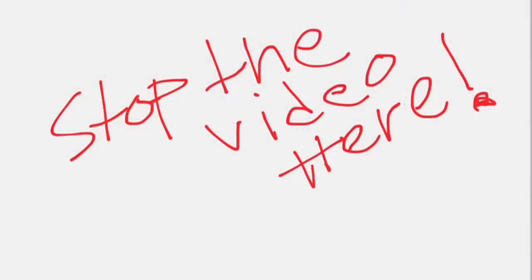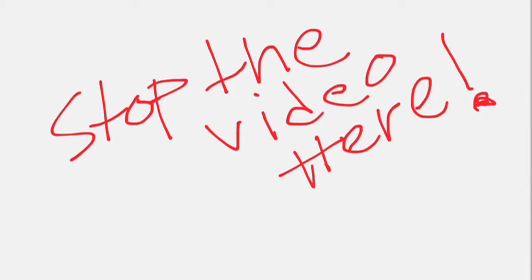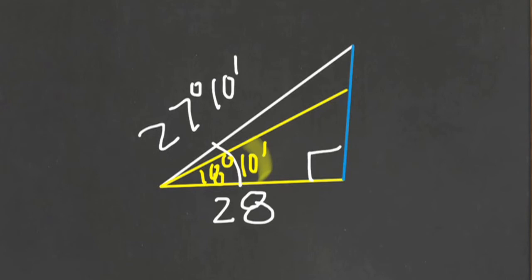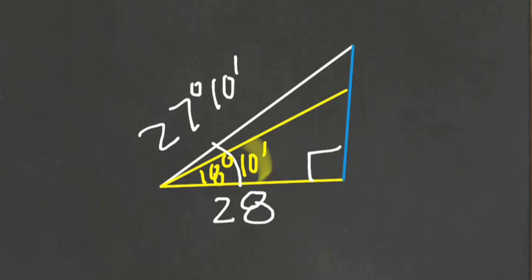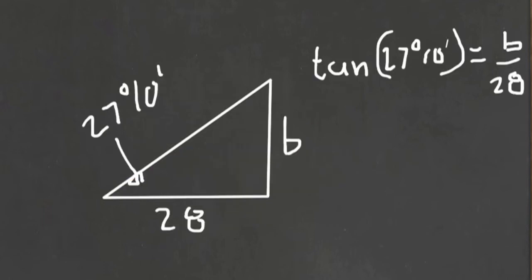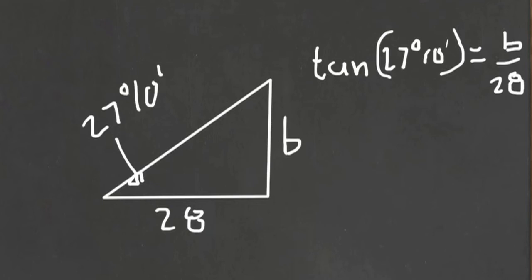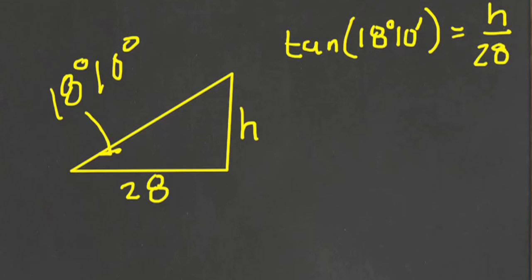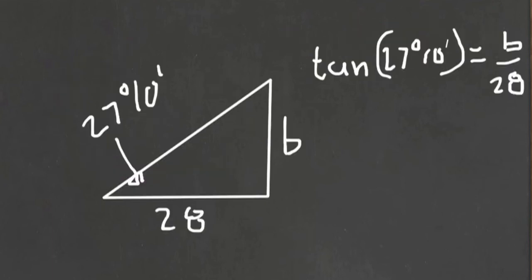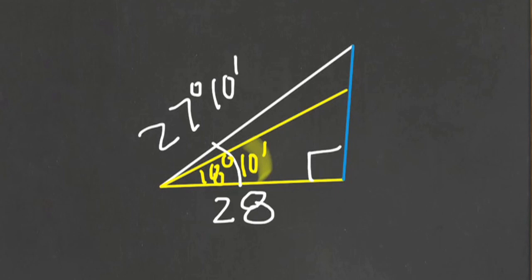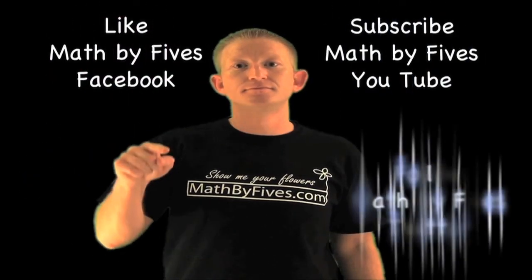So you probably didn't stop the video there. You go back and reread the problem, and you realize that the word 'from' means that the 28 is the distance away from the center of the house. How are you going to do this problem? You have two triangles once more — a big one and a small one. Find the tangent of the big one and the tangent of the small one. Solve the big one for h, solve the small one for b, subtract the two, and that's going to be the height. Do that and post that answer in the comments below. Bye!